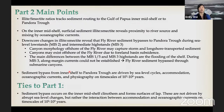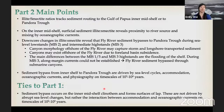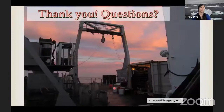To summarize part two: illite-to-smectite ratios track sediment routing to either the Gulf of Papua mid shelf or to Pandora Trough. On the inner mid shelf, surficial illite-to-smectite reveals proximity to river source and mixing by oceanographic currents. Downcore changes reveal that Fly River sediment potentially bypassed to Pandora Trough during the MIS 2 low stand and the intermediate MIS 3 high stand. Canyon morphology offshore the Fly River may capture storm and longshore transported sediment, and these canyons may exist due to foreland basin subsidence. The main difference between MIS 1 and 5 high stands and the MIS 3 intermediate stage is shelf flooding — during MIS 3, along-margin currents could not be established, allowing Fly River sediment to bypass. This ties to part one: sediment bypass on the inner mid-shelf clinothem in the form of surfaces of lap is driven not by abrupt sea level changes but by interaction between accommodation and oceanographic currents, on timescales of hundreds to thousands of years.